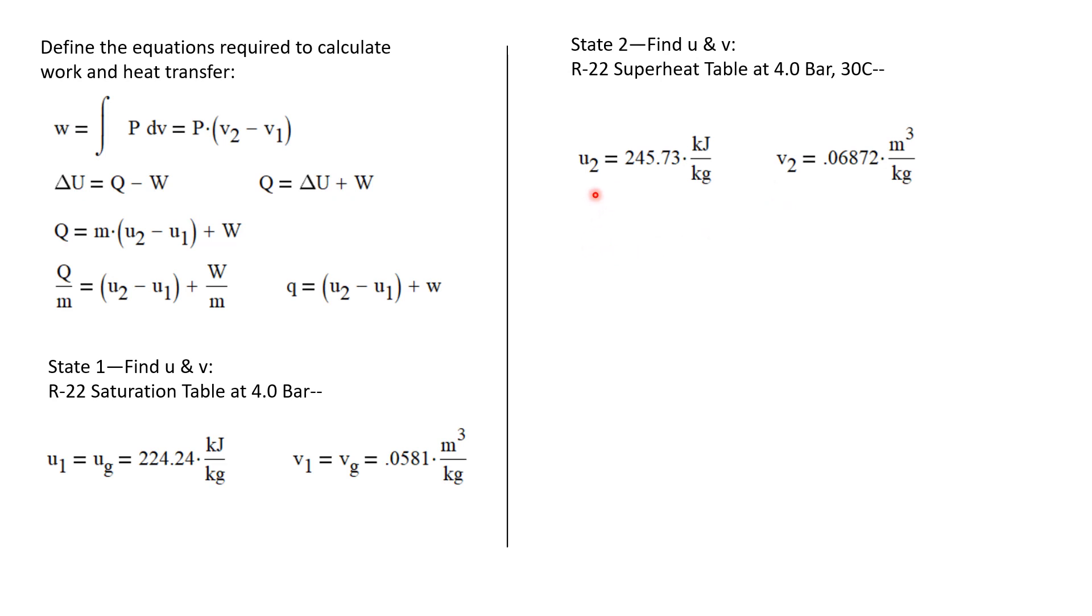I can find those values in the superheat table. I find that u₂ is 245.73 kilojoules per kilogram, and v₂ equals 0.06872 cubic meters per kilogram.